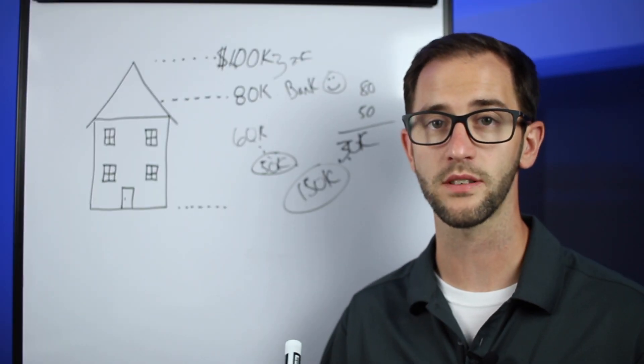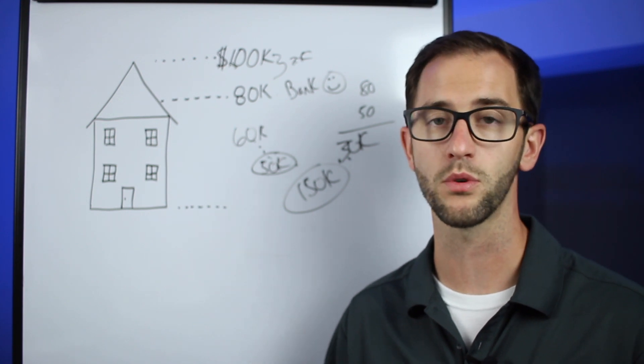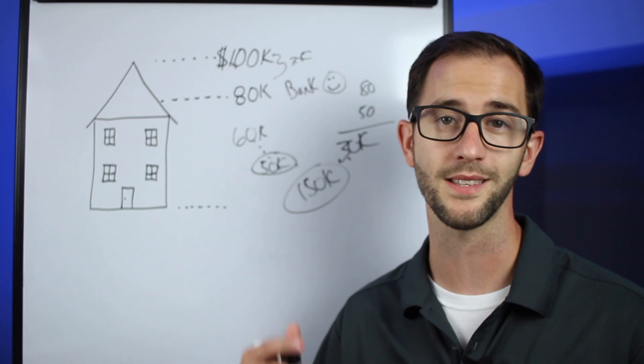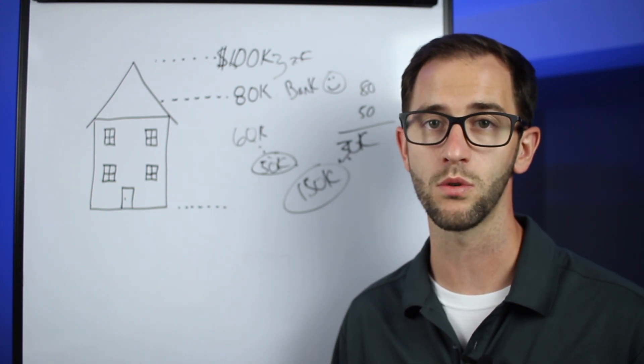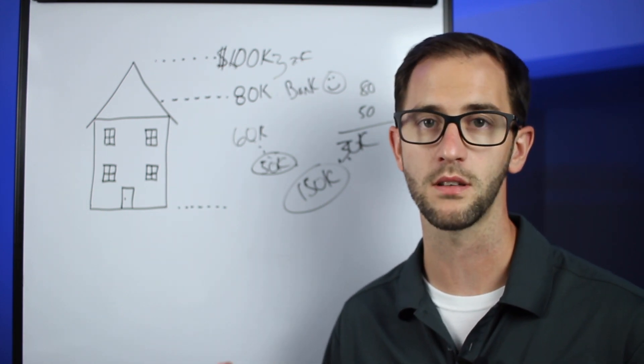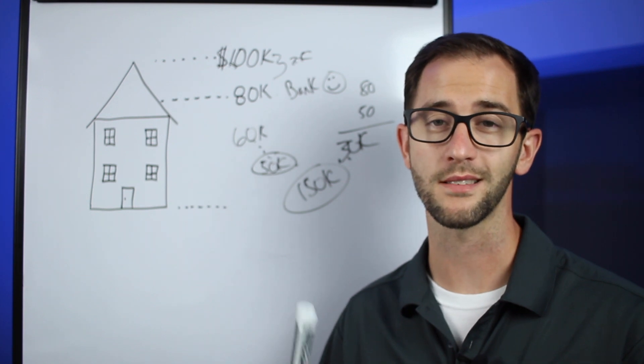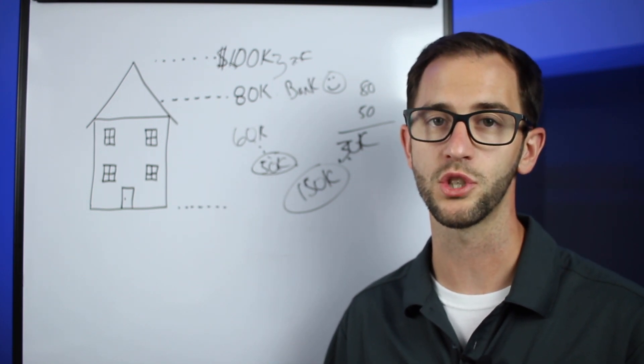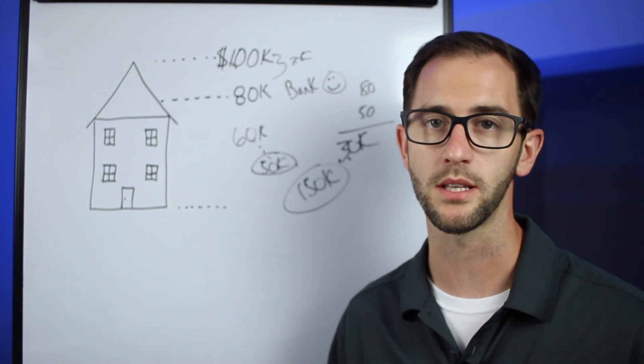With a HELOC this thing is going to adjust according to some other variables but it's likely going to adjust on a monthly basis and it will likely be a couple points higher than what you'd be used to on a long-term thirty-year fixed note. So it is interest-only and it's likely going to be a little bit higher interest rate than you're used to and it will adjust and change on a month-to-month basis.